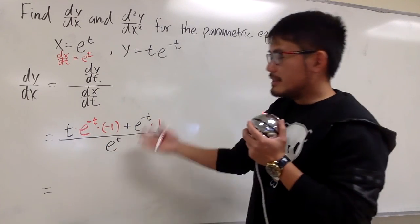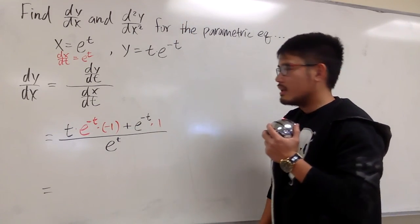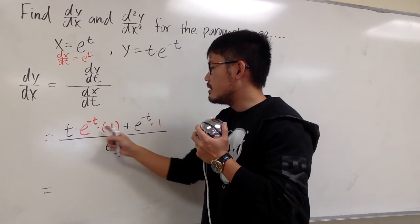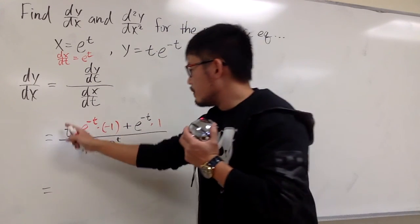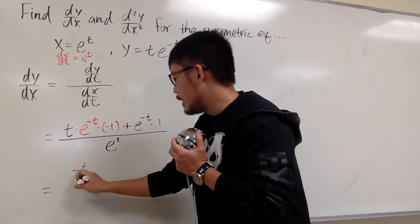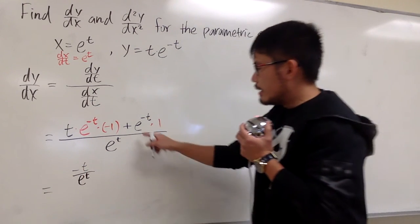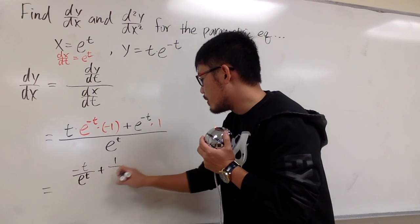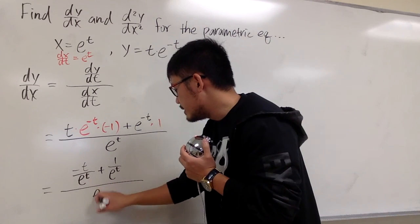I'm going to rewrite this more clearly to make it easier to find d²y/dx². For the first part, we have t times e to the negative t times negative 1. Whenever we have a negative exponent, let's bring that down to the denominator. So I write that as negative t over e to the positive t, and then we add e to the negative t written as 1 over e to the t, all over the denominator e to the t.